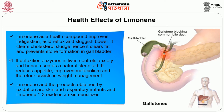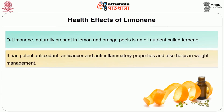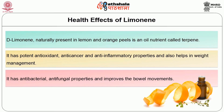Limonene and its oxidation products are skin and respiratory irritants, and limonene-1,2-oxide is a skin sensitizer; research with dermatitis patients showed 3% were sensitive to limonene. D-limonene naturally present in lemon and orange peel is a terpene nutrient with potent antioxidant, anticancer and anti-inflammatory properties. It also has antibacterial and antifungal properties and improves bowel movements. It acts as a solvent for cleaning purposes like removal of oil from machine parts and also acts as a botanical insecticide. As limonene is combustible, it is now being considered as a biofuel.